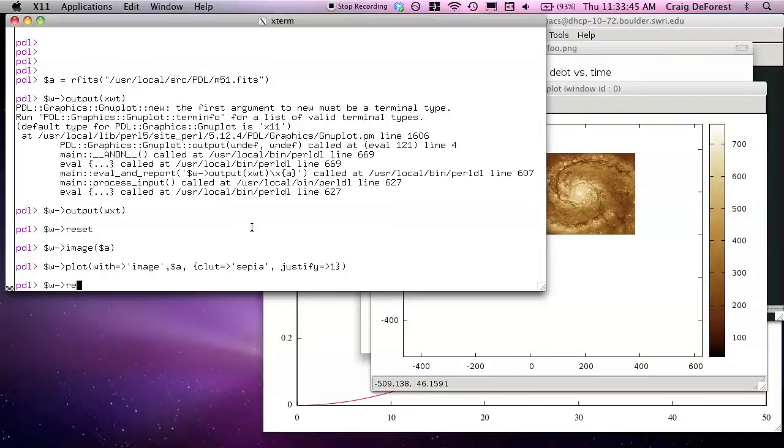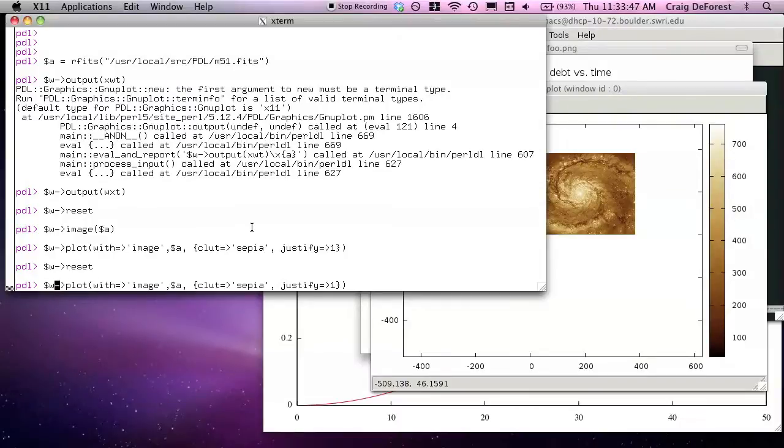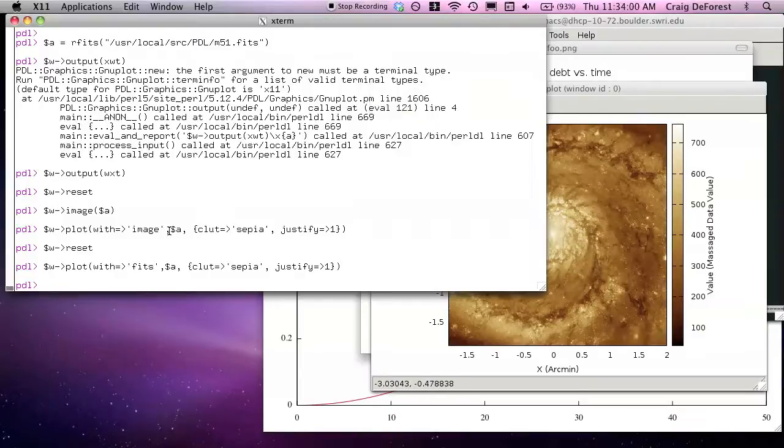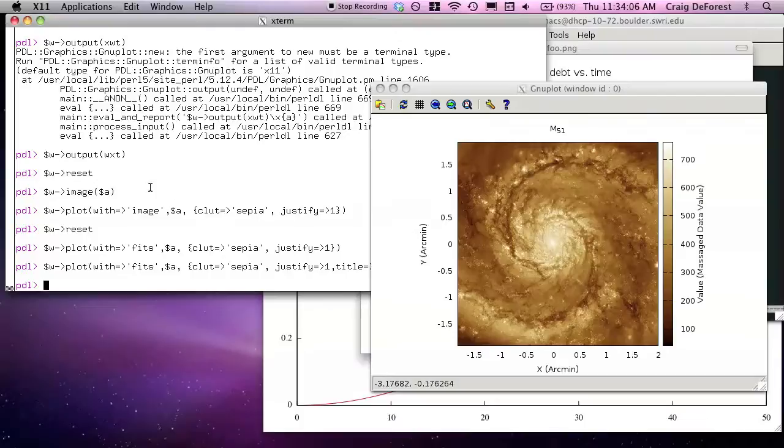Let's do, instead of image, we can use something called fits, which will extract world coordinate system information from the image and put things up in scientific coordinates. You can see the reported coordinates are scientific now instead of pixel. That's kind of nice. Let's put a title on that.